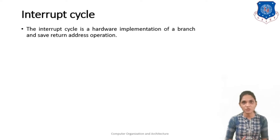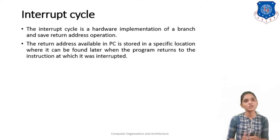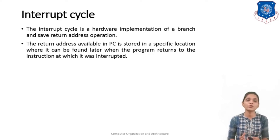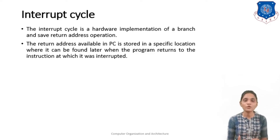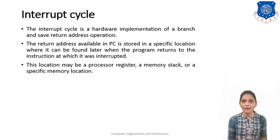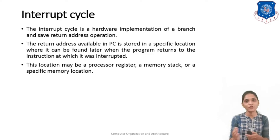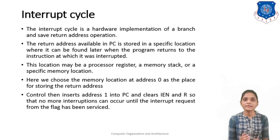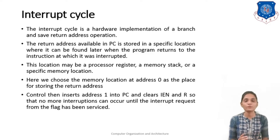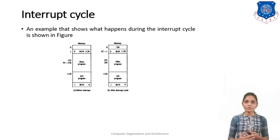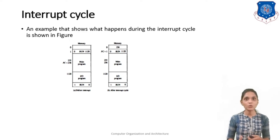So this is the basic cycle for your interrupt execution. This interrupt execution cycle is the hardware implementation of the branch and save the return address operation. The return address available in the PC is stored at a specific location where it can be found later when the program returns to the instruction at which it was interrupted earlier. The location may be a processor register, memory stack, or a specific memory location, but in the flowchart we have used the specific memory location 0. Then control inserts the address 1 into PC and clears IEN and R so that no more interrupts can occur until this interrupt request has been serviced. Here we have put location 0 blank. At location 1 we have stored the instruction BUN 1120, showing that we have stored our interrupt service routine at location 1120.